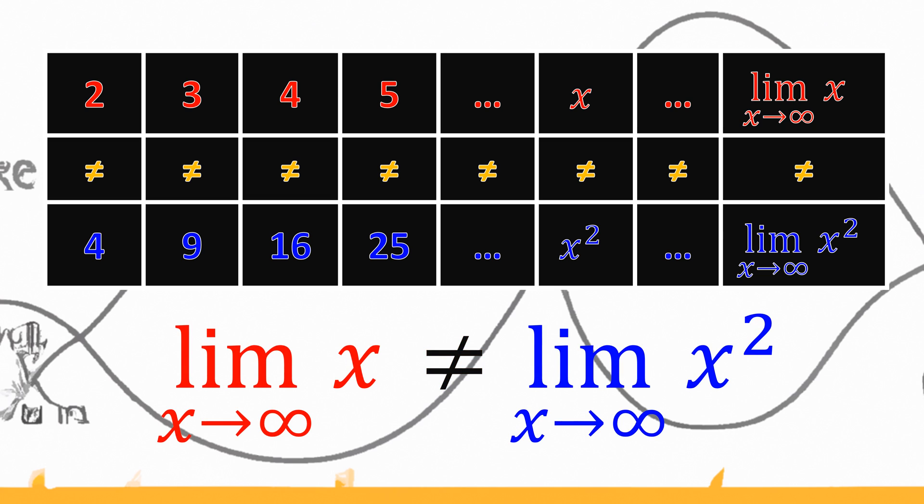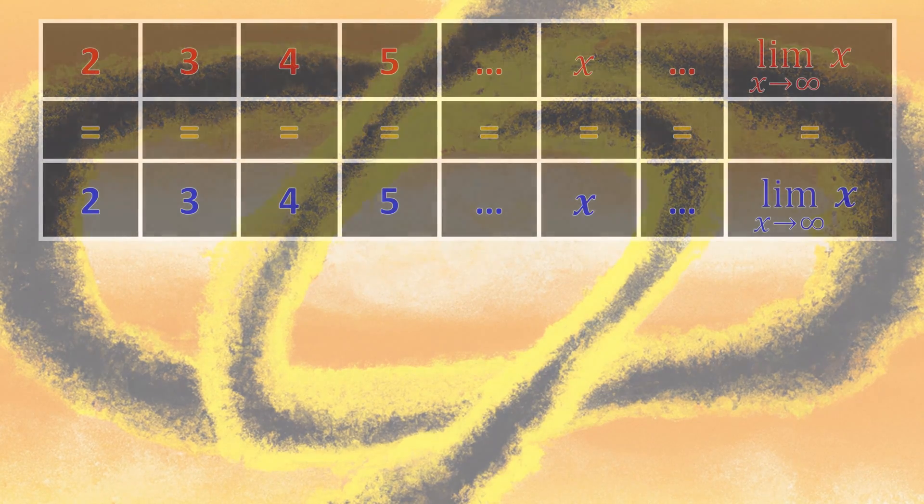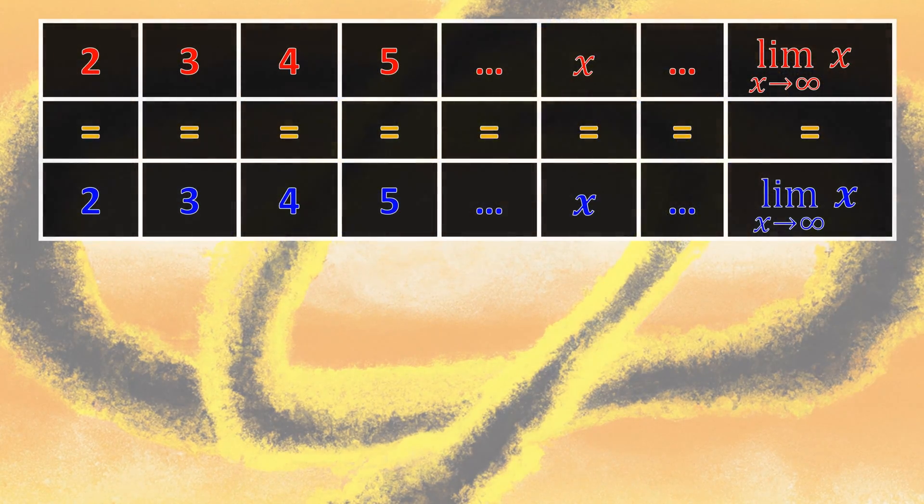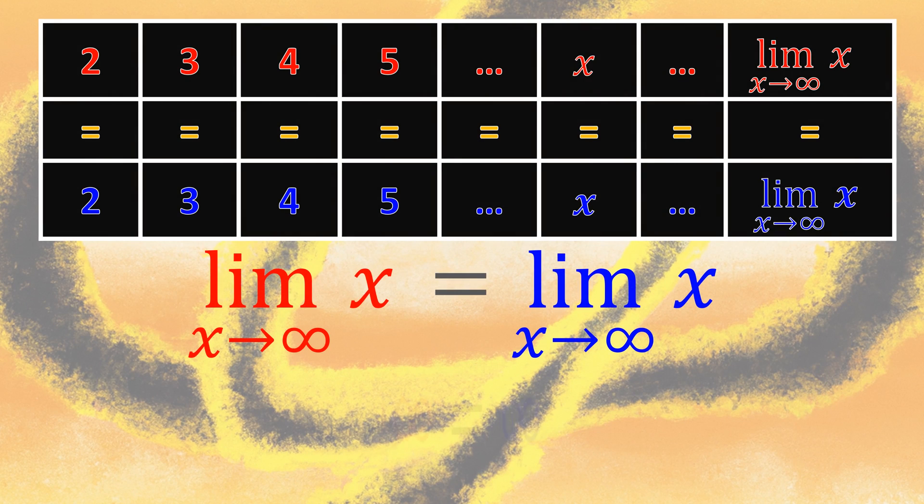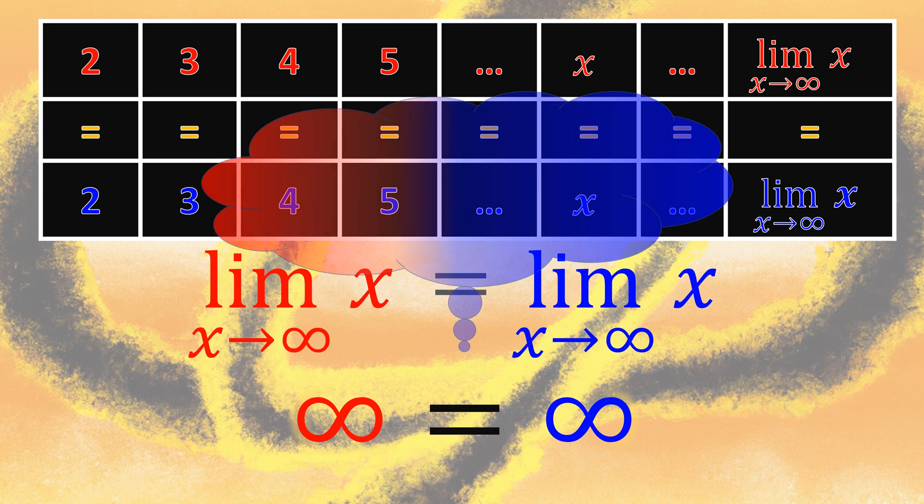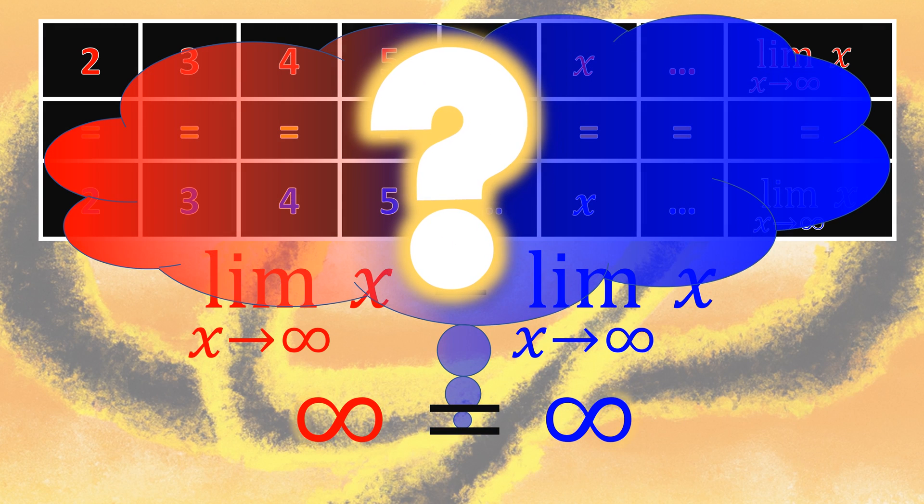This assumption will be a mistake. Assuming that infinity cannot be equal to infinity is a mistake too. Here, we can easily see that infinity can be equal to infinity. And the big question is, when is infinity equal to infinity satisfied? And how can we solve this equation?